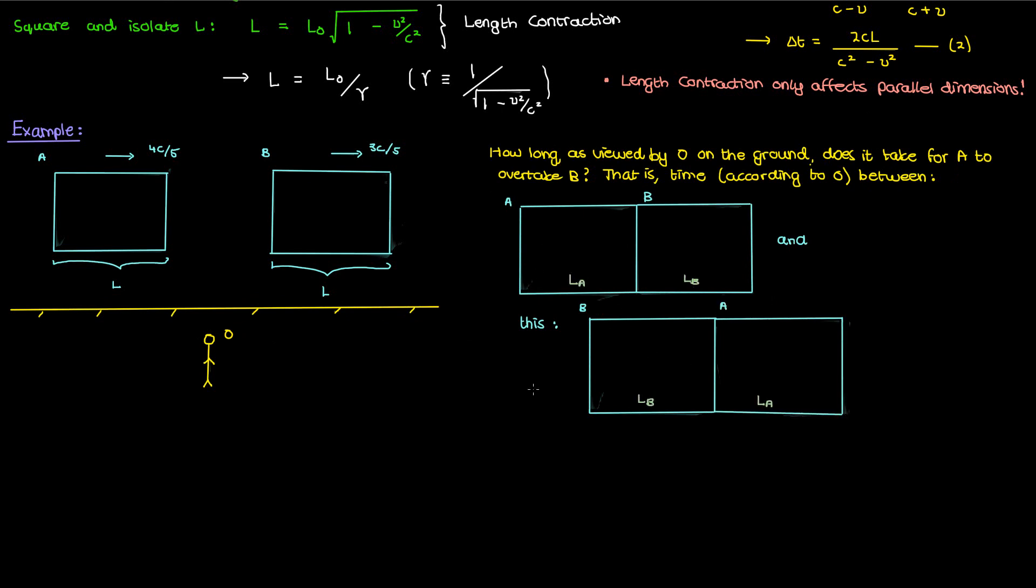Well in order for A to pass B it must travel the length of the train B in observer O's frame which I'll call L sub B in order to have the front sides line up. It must also travel its own length L sub A in order to have its back side line up with B's front side. And finally it must also travel the distance that train B traveled in this entire time interval which I'll call delta T. So this is the distance that A travels. If I divide this distance by the velocity of A then I'll get the time interval delta T for this entire overtaking process.